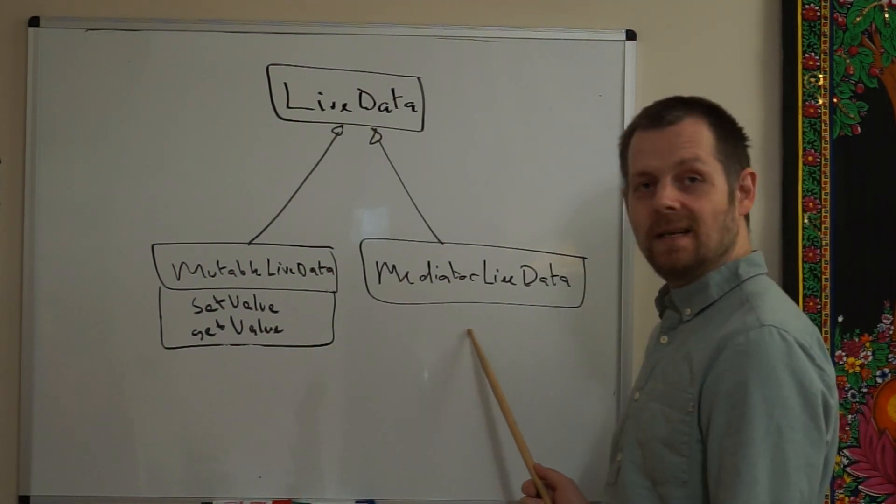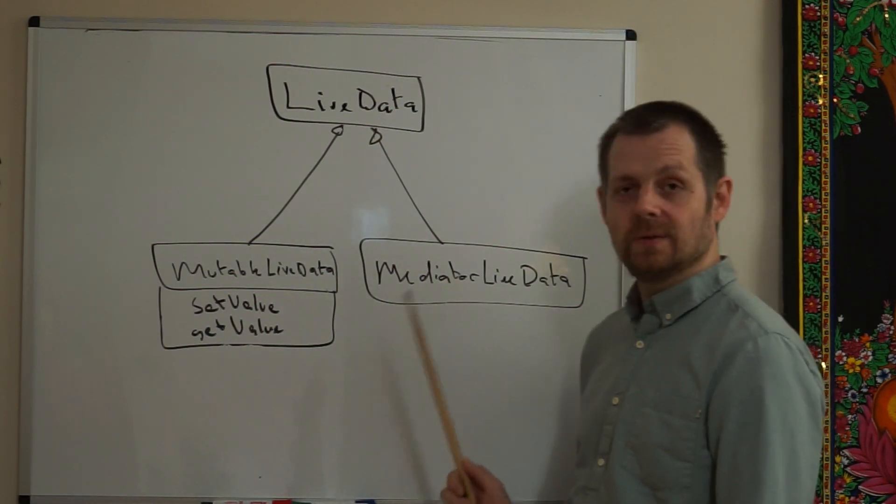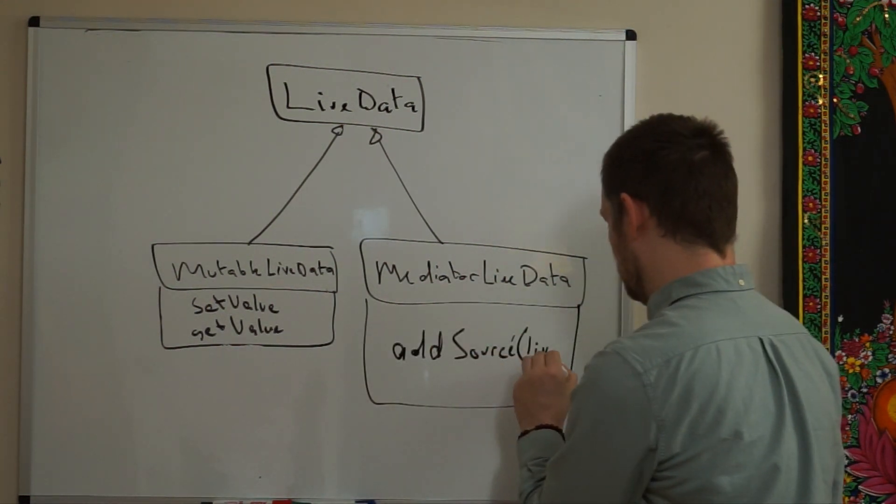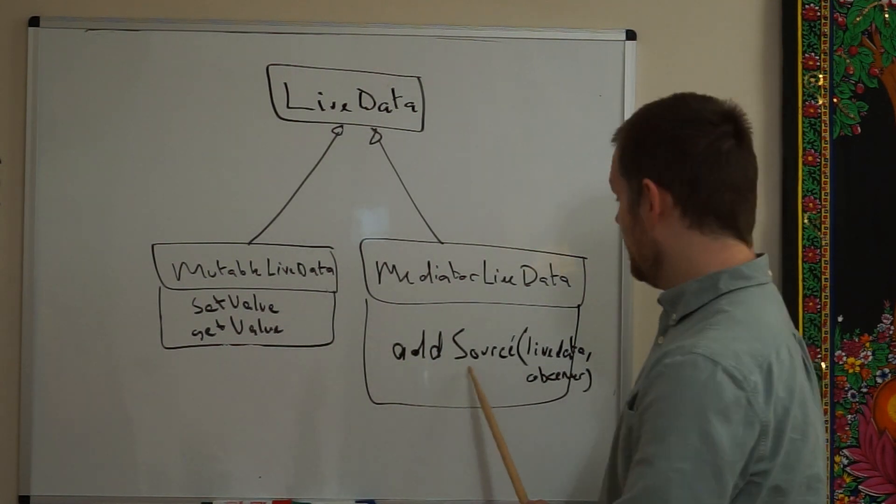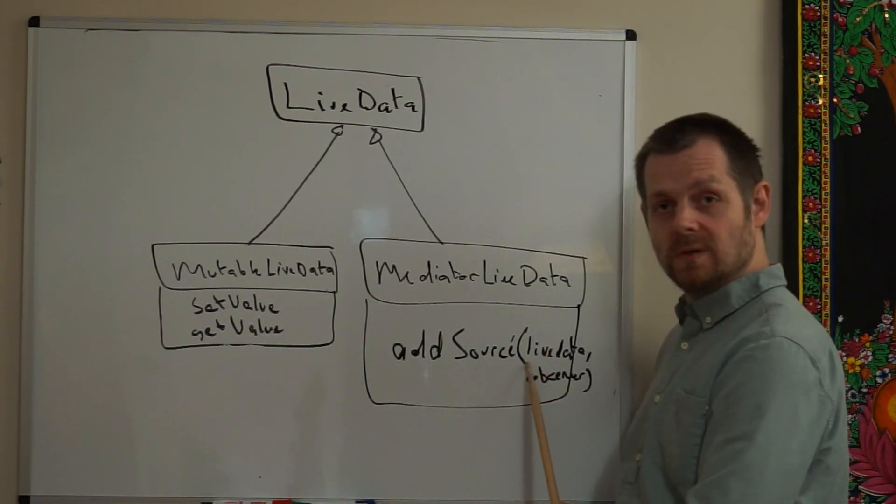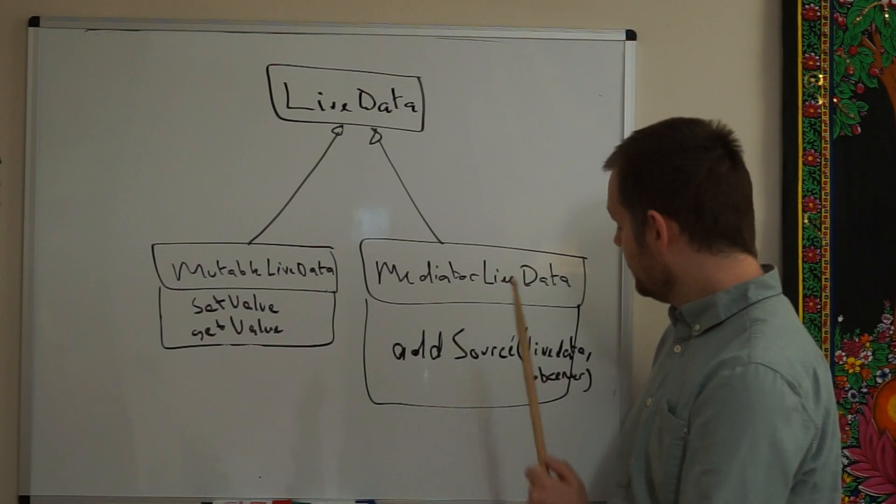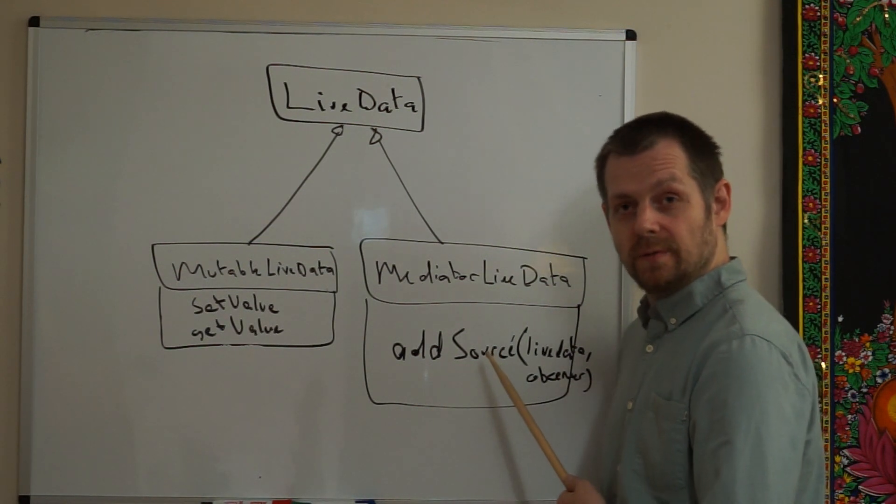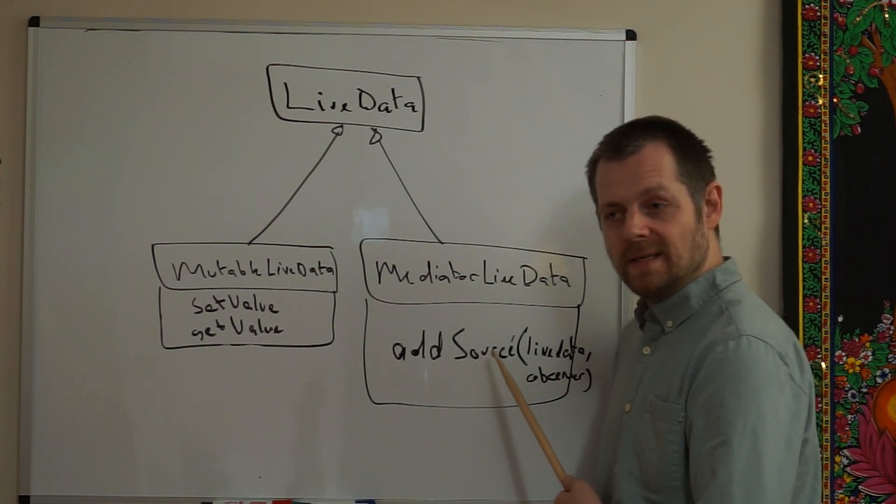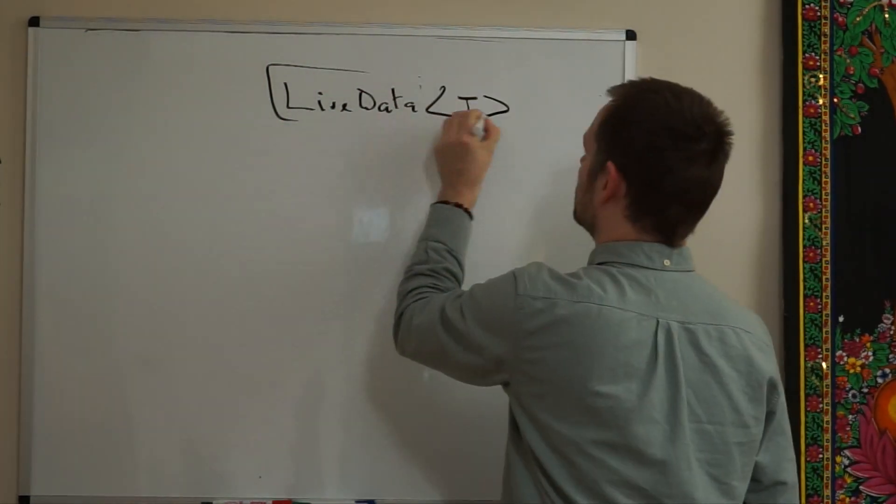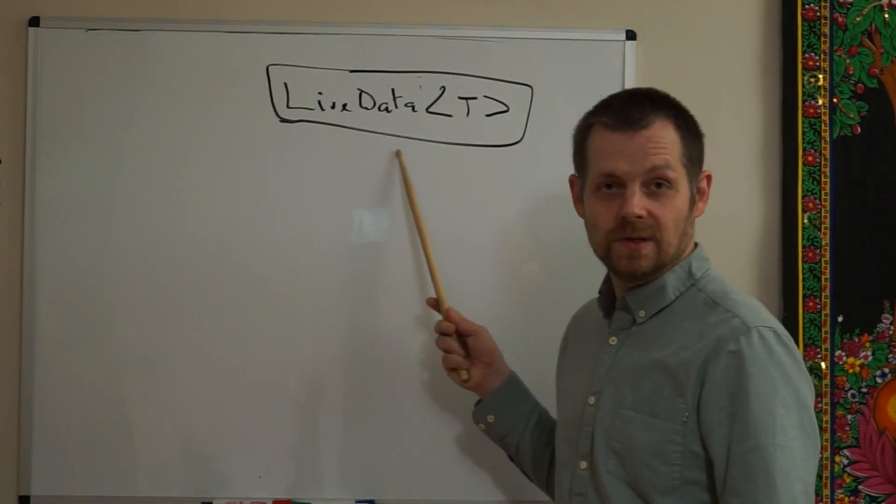The next subclass is MediatorLiveData. MediatorLiveData is very useful for listening to other LiveData sources. MediatorLiveData has a method addSource, which you can add a source LiveData and an observer. When the source LiveData changes, the observer will be called. MediatorLiveData is useful for things like maybe waiting for a batch of LiveData to finish.